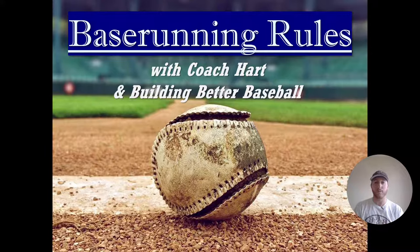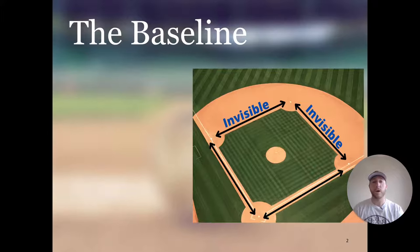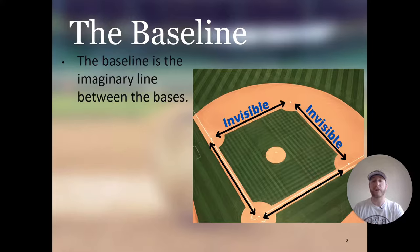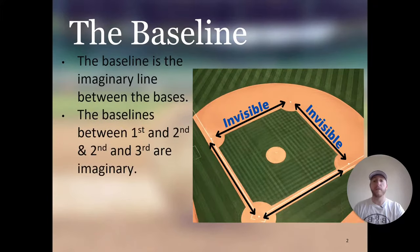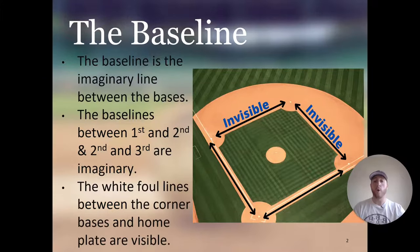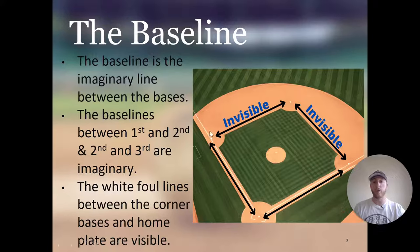Let's get into base running rules. The first thing we're going to talk about is the baseline itself. There are four baselines in baseball — an imaginary line between each of the bases. The baselines between first and second, and second and third, are invisible; there's no actual visible line marking them. The white foul lines between the corner bases and home plate are the visible baselines you can see between third base and home, and first base and home.